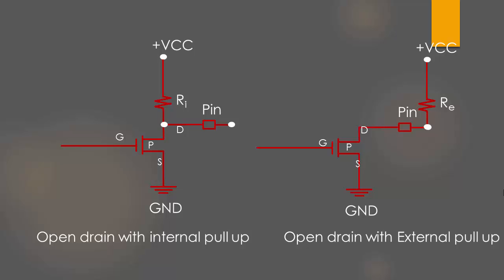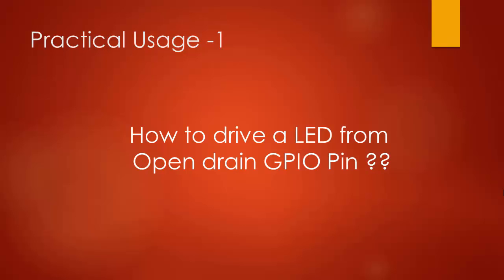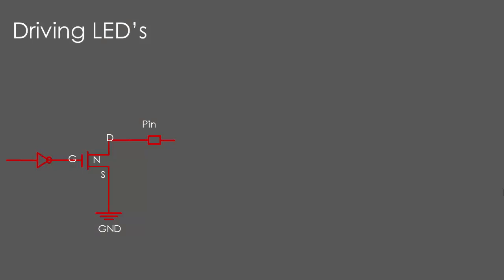Now let's see some of the practical usage of open drain mode. Let's see how to drive an LED from a GPIO which is in open drain output mode. Here you have a GPIO pin with open drain configuration. In order to drive an LED, first activate the internal pull-up resistor, then connect the LED to the pin.